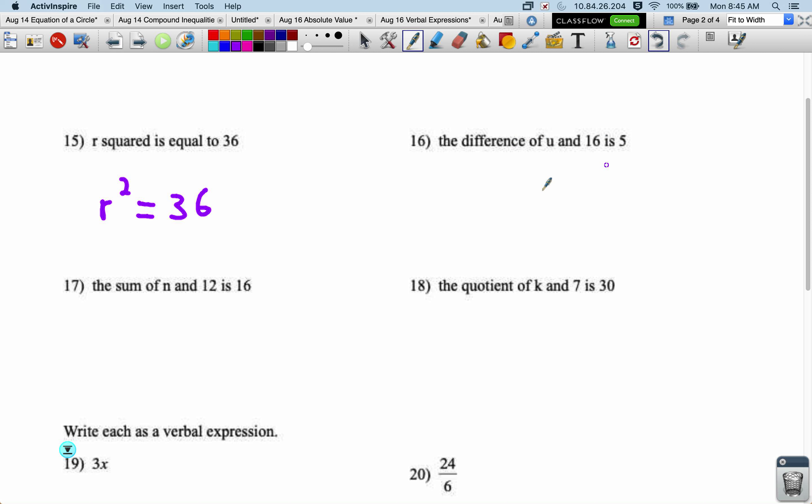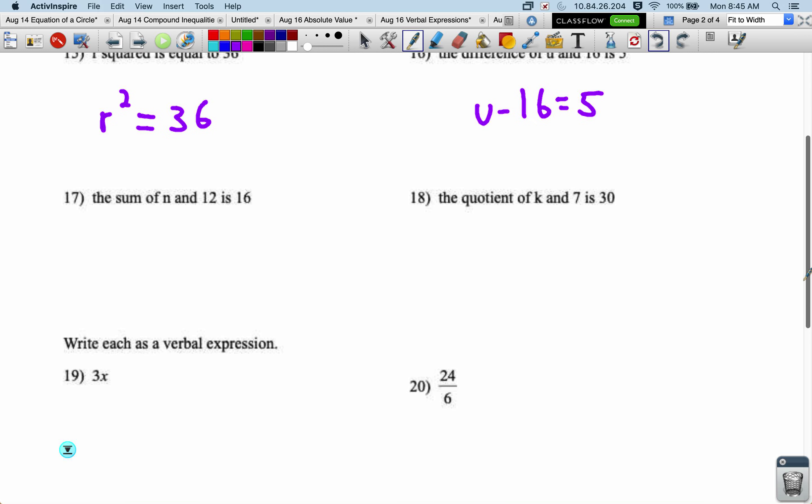The difference of u and 16 is 5. So u minus 16 equals 5. So it goes a little bit out of order. Difference comes before the two things that are being subtracted, but everything else is in the same order when we go to that algebraic expression.